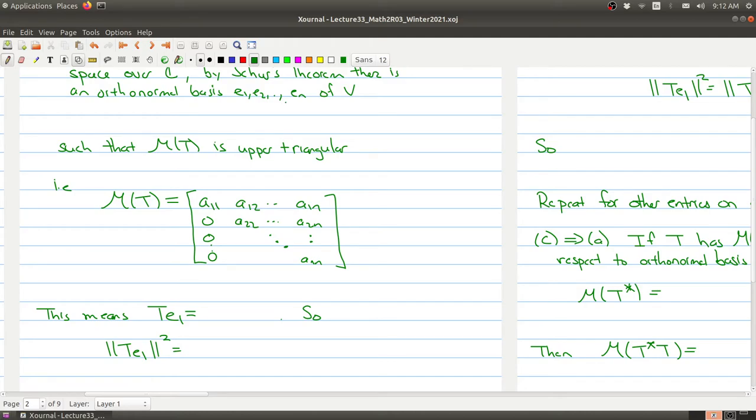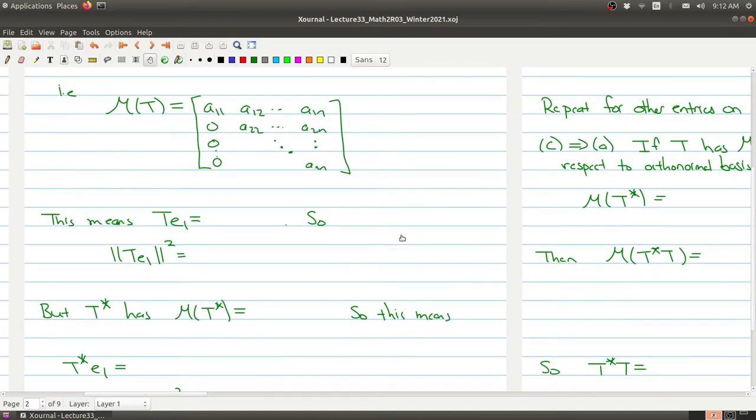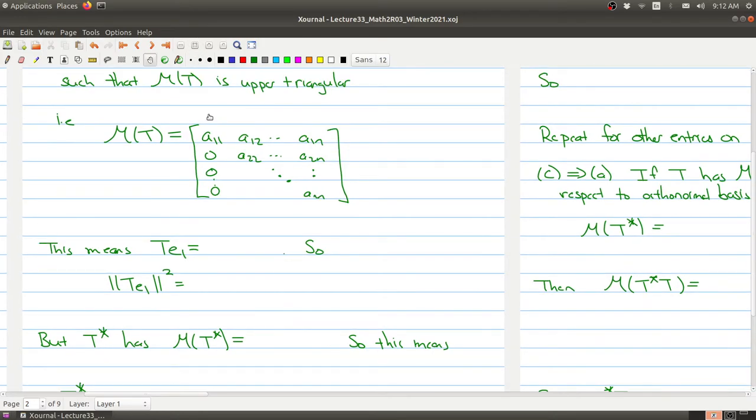So that's what Schur's theorem says, I have this orthonormal basis. But now what we want to say is, what can we say about some of the numbers inside of this matrix using the hypothesis that T is normal? Well, first of all, we know that what this matrix is telling me is the first basis E1 is sent to A11 times E1. That's how you interpret what this matrix is saying.